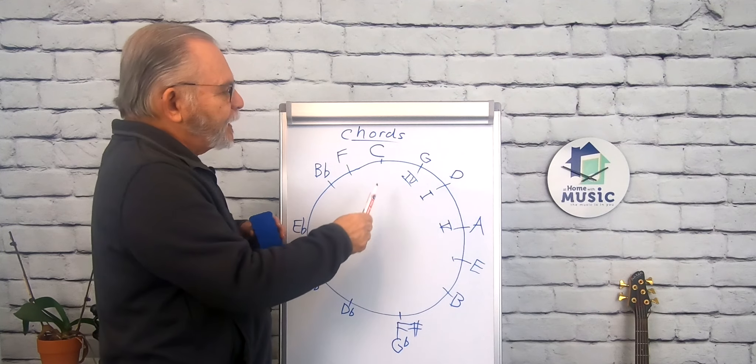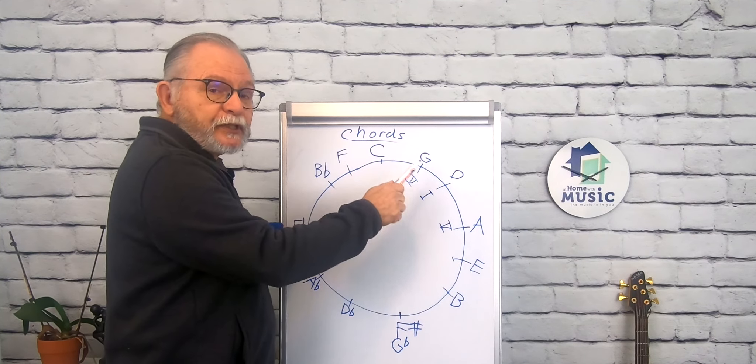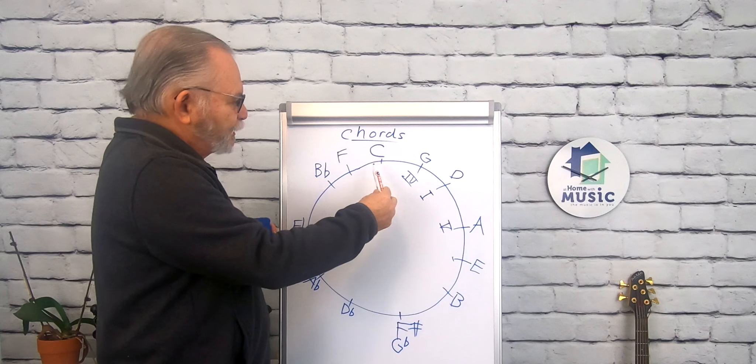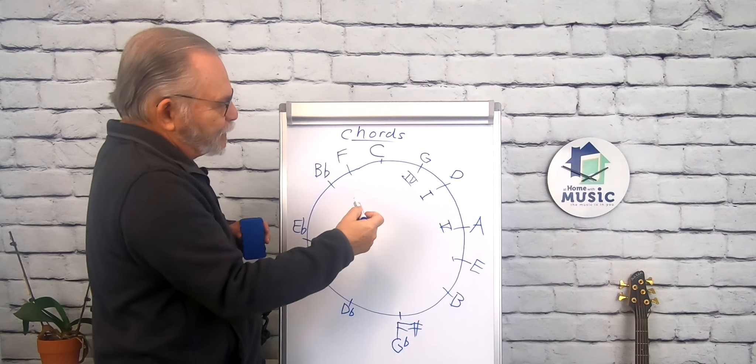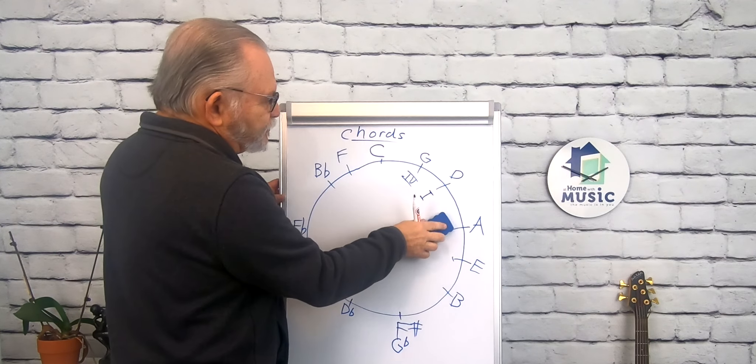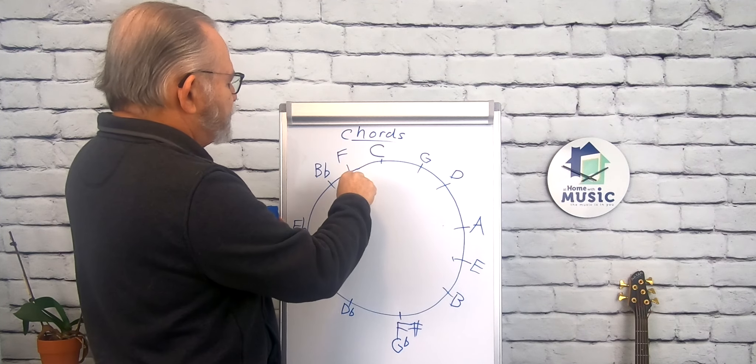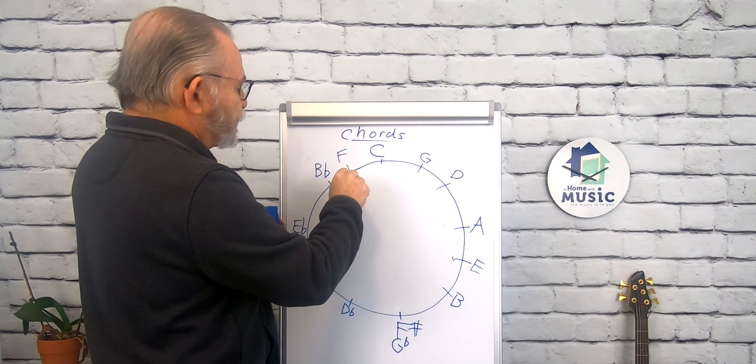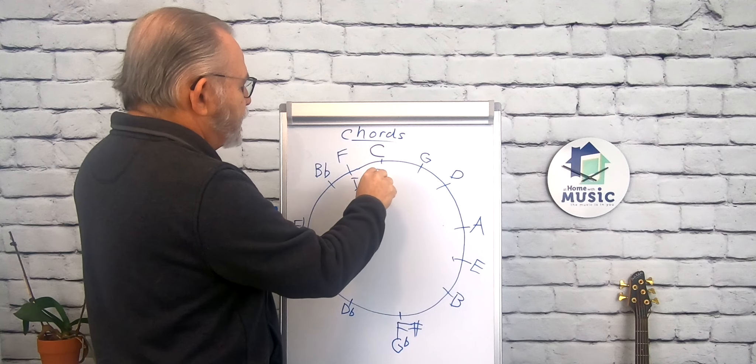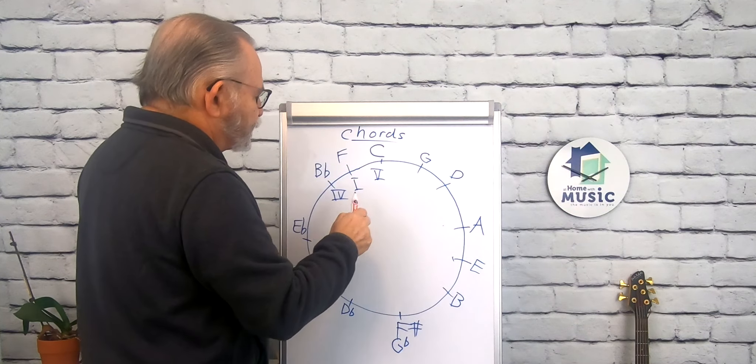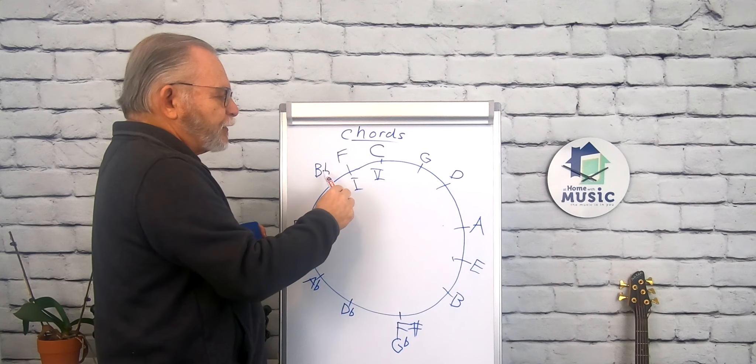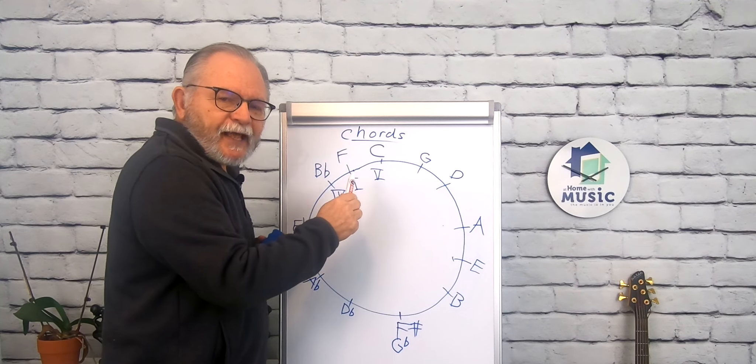Now in the next video, I'm going to explain how this works in relationship to key signatures. You'll notice I didn't go backwards. So if we did F, and I erase these guys, we'll do one going this way. If F becomes the one, becomes the tonic, then C becomes the five, and B flat becomes the four. So now you can play three chord progressions in the key of F.